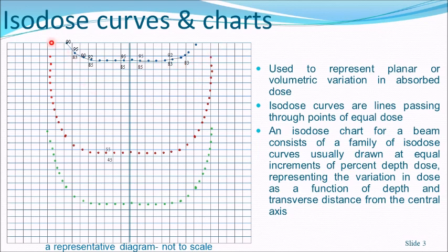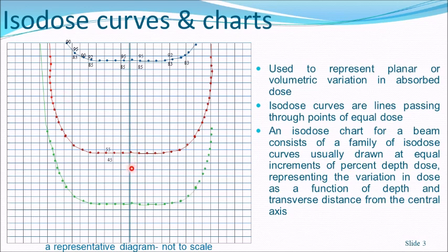Similarly, you can determine the 50% isodose line by interpolation within the grid, and the 30% isodose line likewise. An isodose chart for a beam consists of a family of isodose curves, usually drawn at equal increments of percentage depth dose, as a function of depth and transverse distance from the central axis. As you go deeper or move transversely, the dose decreases.